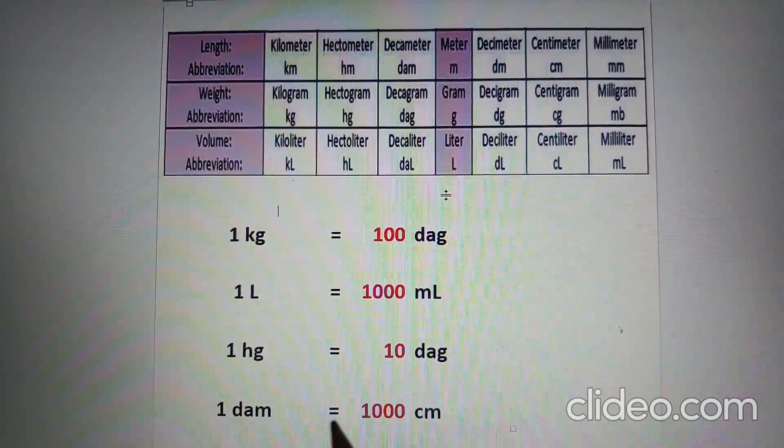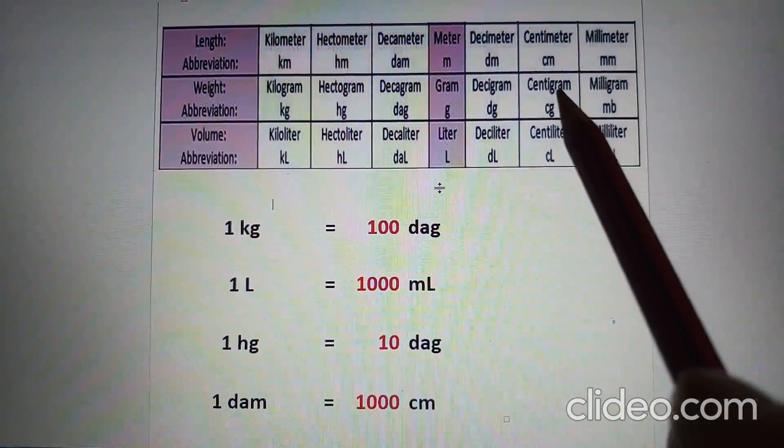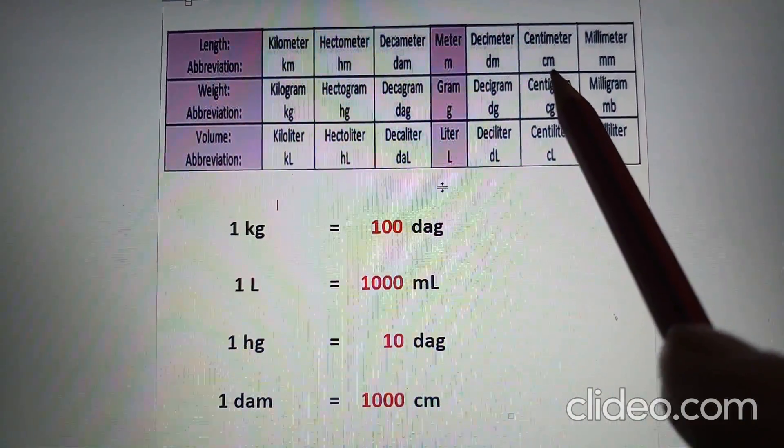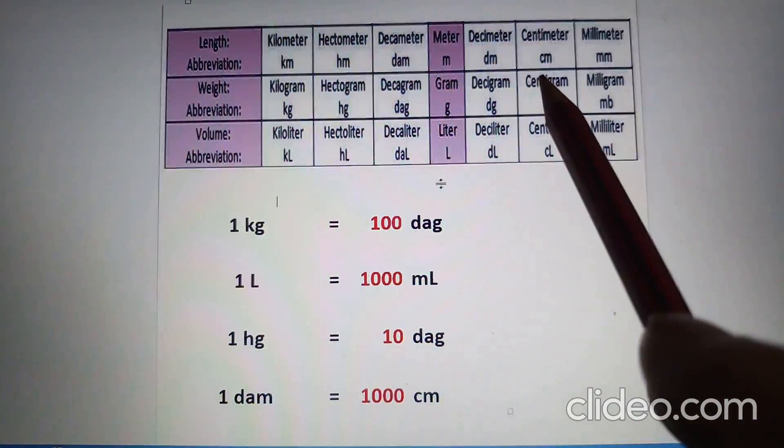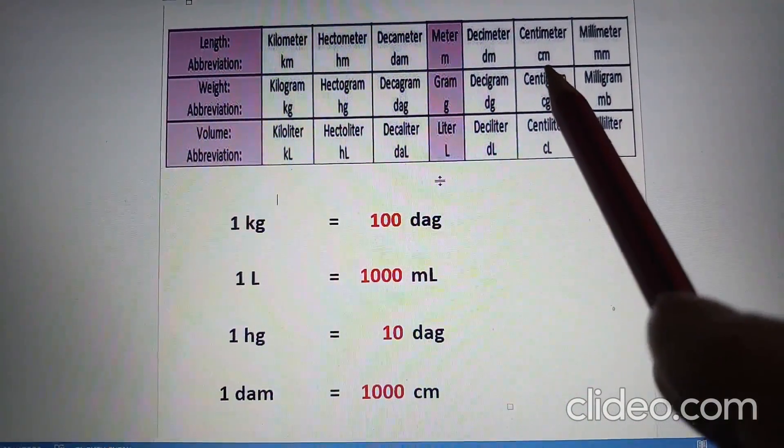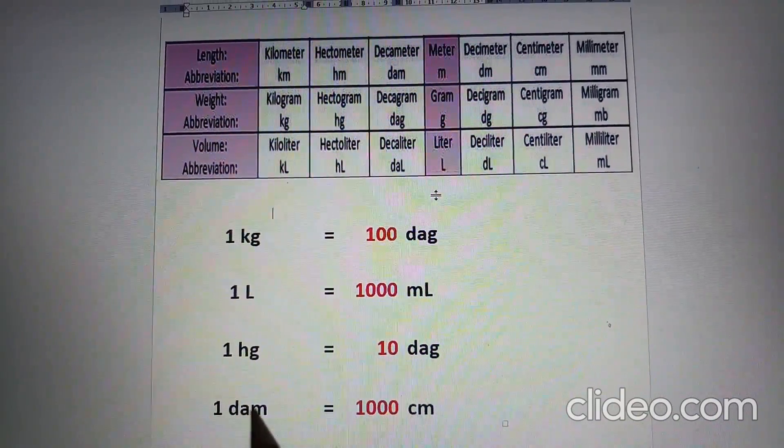1 decameter equals how many centimeters? From decameter to centimeter, we move three steps to the right—10, 10, and 10. 10 times 10 times 10 equals 1,000. Therefore, there are 1,000 centimeters in 1 decameter.